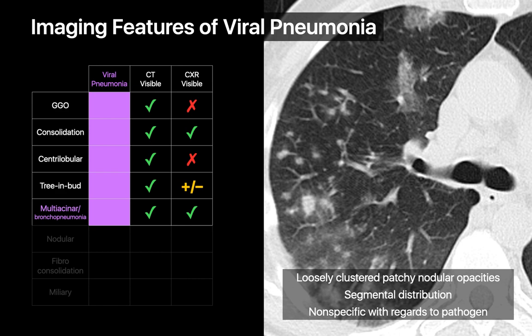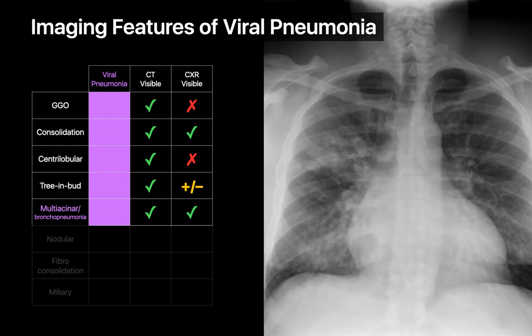Viral pneumonias may also present with a multi-acinar or bronchopneumonia pattern. This pattern consists of loosely clustered patchy nodular lung opacities that may often appear in a segmental distribution. Multi-acinar opacity patterns are usually visible on chest x-ray and appear as a heterogeneous opacity with indistinct borders.